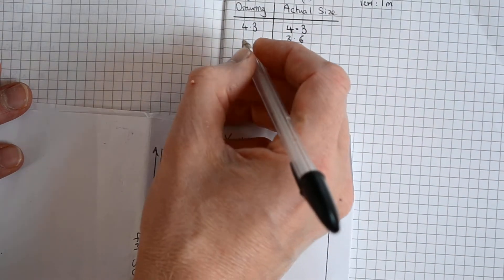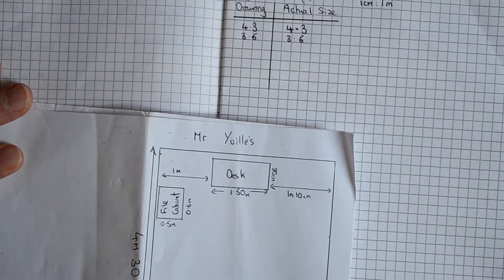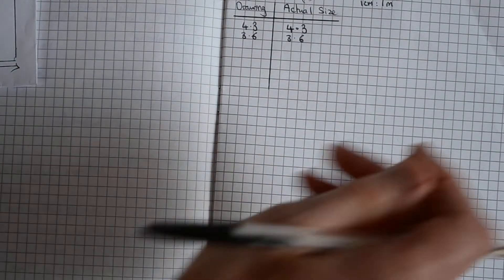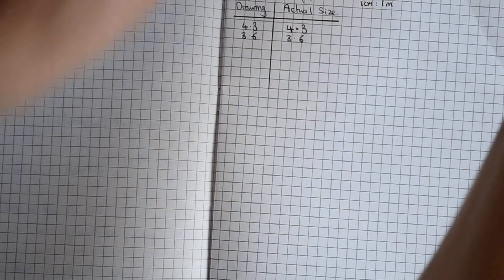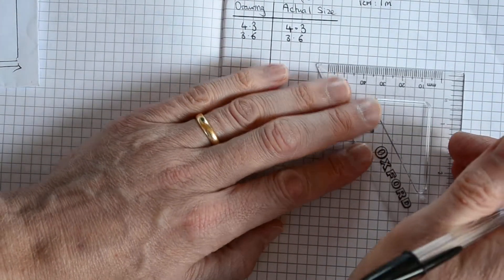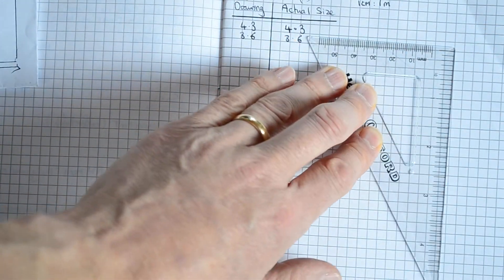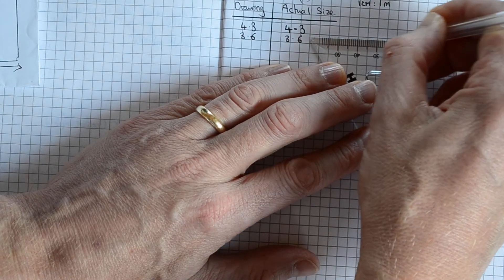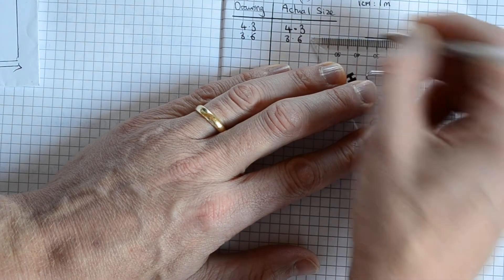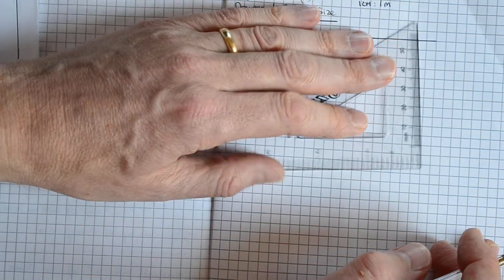So let's start off by drawing that workspace. So it's going to be 3.6 wide, okay, 3.6 and 4.3 long. Should be 4.3, and just about okay.